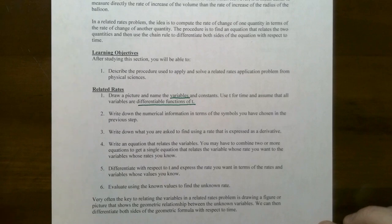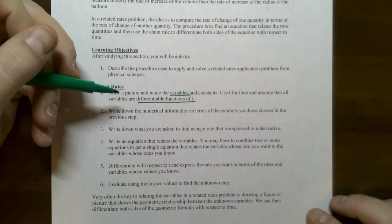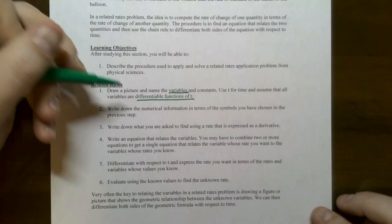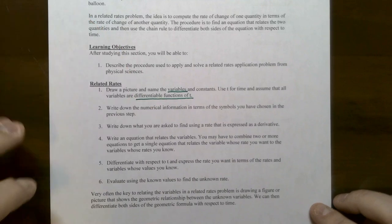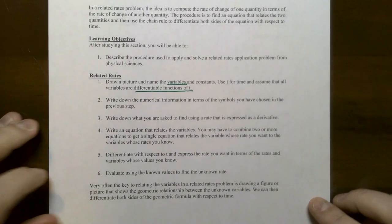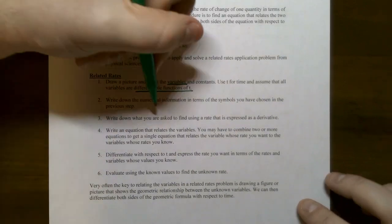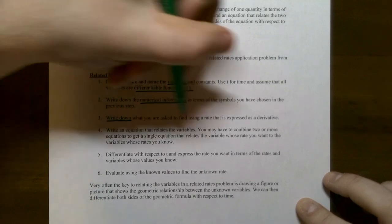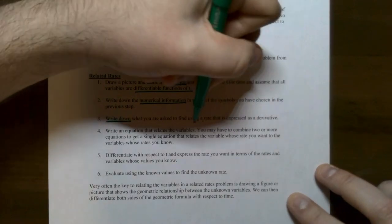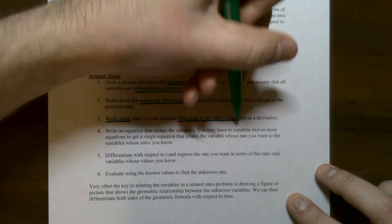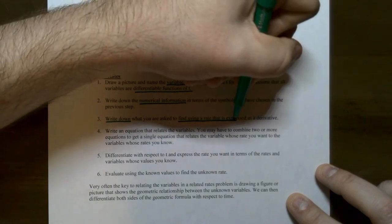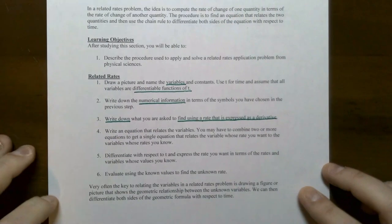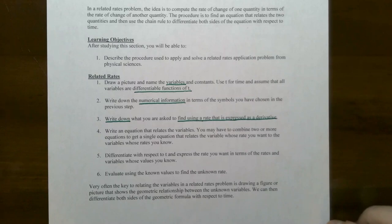The second step is to write down all the numerical information in the problem; they should be related back to the variables from the first step. The third step is to write down what rate you are being asked to find and express the rate as a derivative.